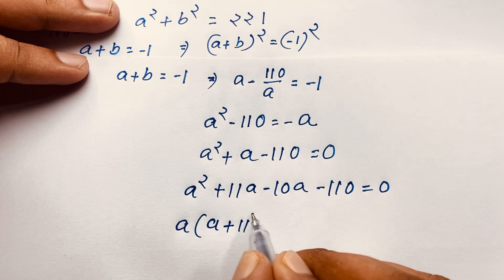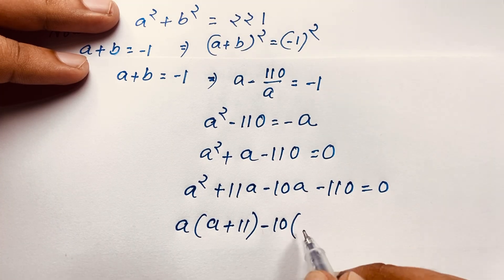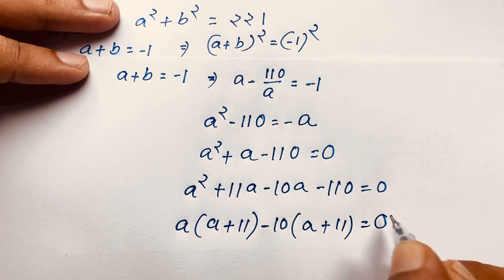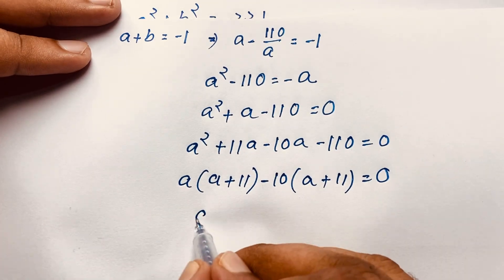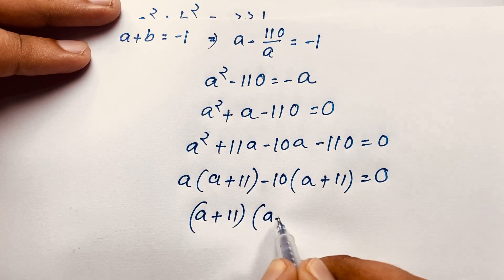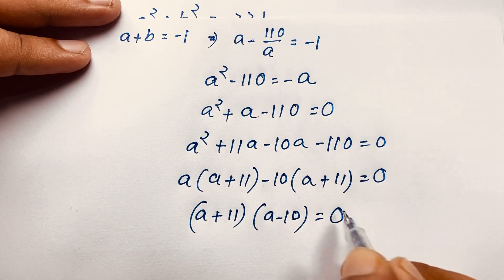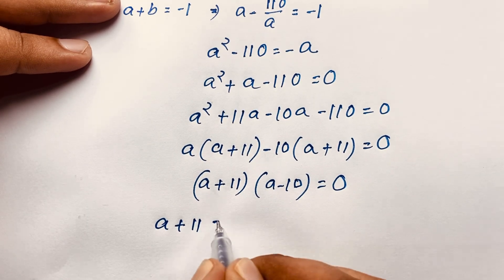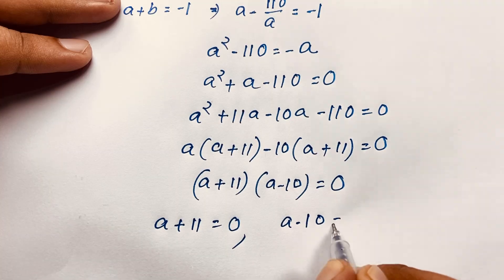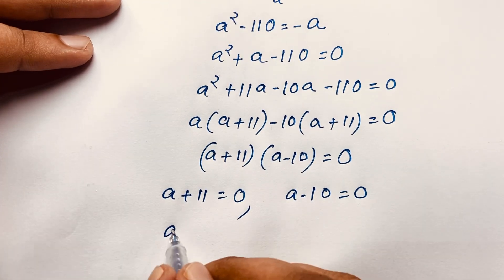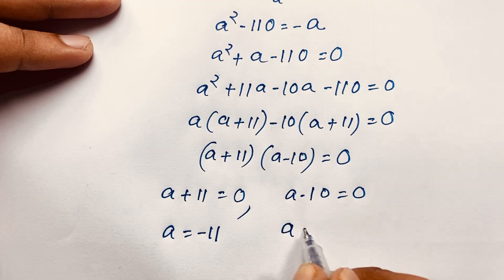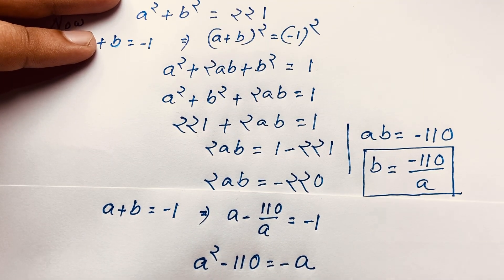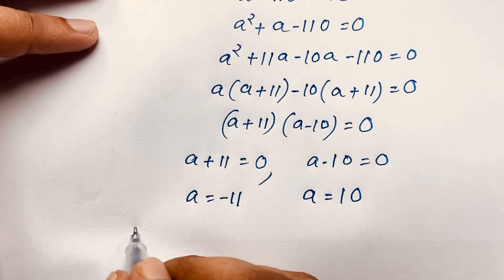Now I factor this quadratic equation. Since 110 equals 11 times 10, I split the middle term: a squared plus 11a minus 10a minus 110 equals 0. Factoring by grouping: a(a + 11) minus 10(a + 11) equals 0, so (a + 11)(a − 10) equals 0. This gives two cases: a equals minus 11 or a equals 10.